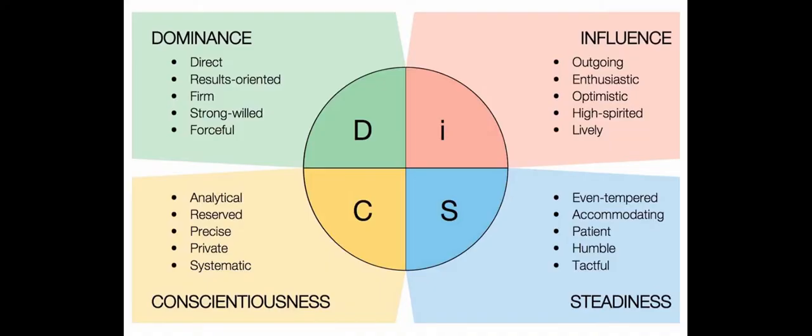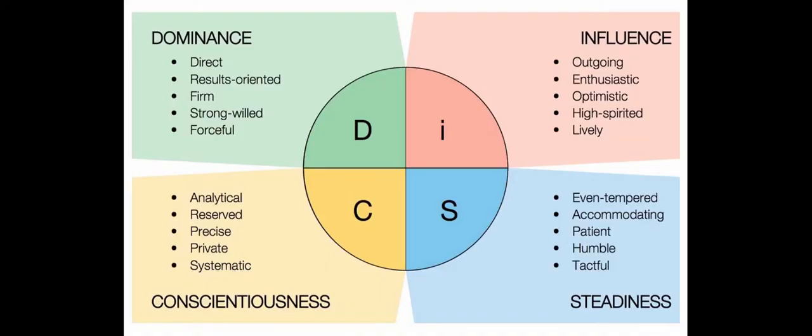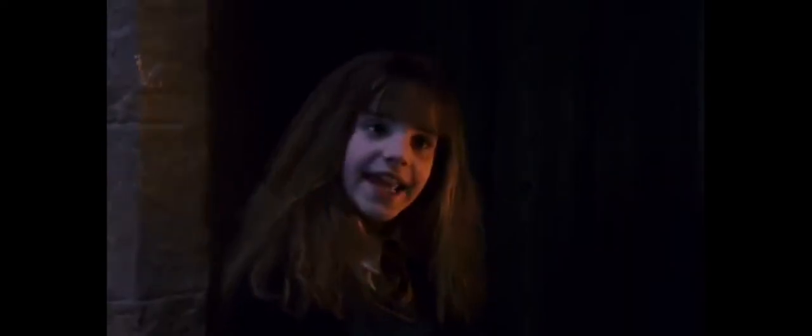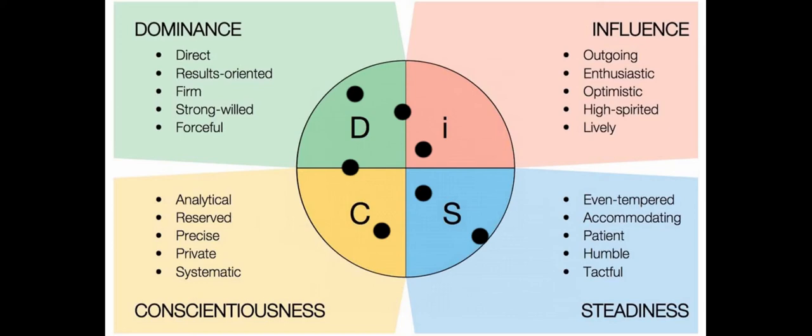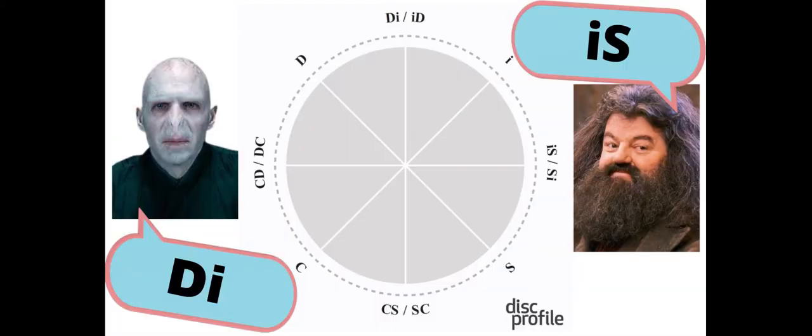There are four types of communication styles. First being D for dominance. These people are often direct, results-oriented, firm, strong-willed, and forceful. When we think of this, we think Harry Potter, and these people are often characterized as being impatient and impulsive.